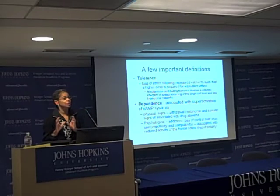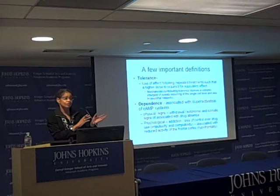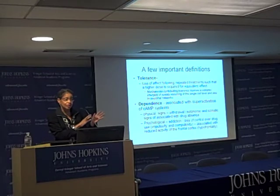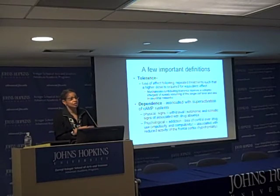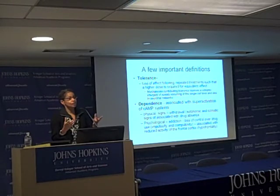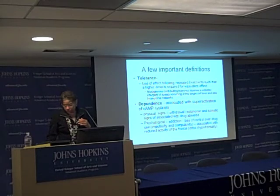We're going to talk about two molecular cellular pathways: the dopaminergic system, which is the reward system, and the norepinephrine system — the other catecholamine — which drives your sympathetic nervous system. Both of these, the reward system in particular, I'll explain in just a moment.